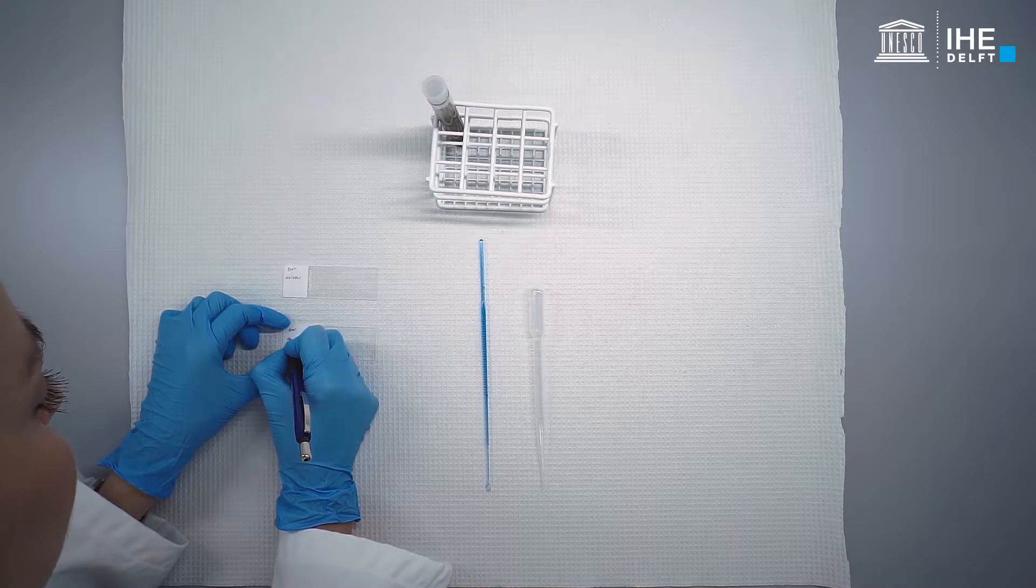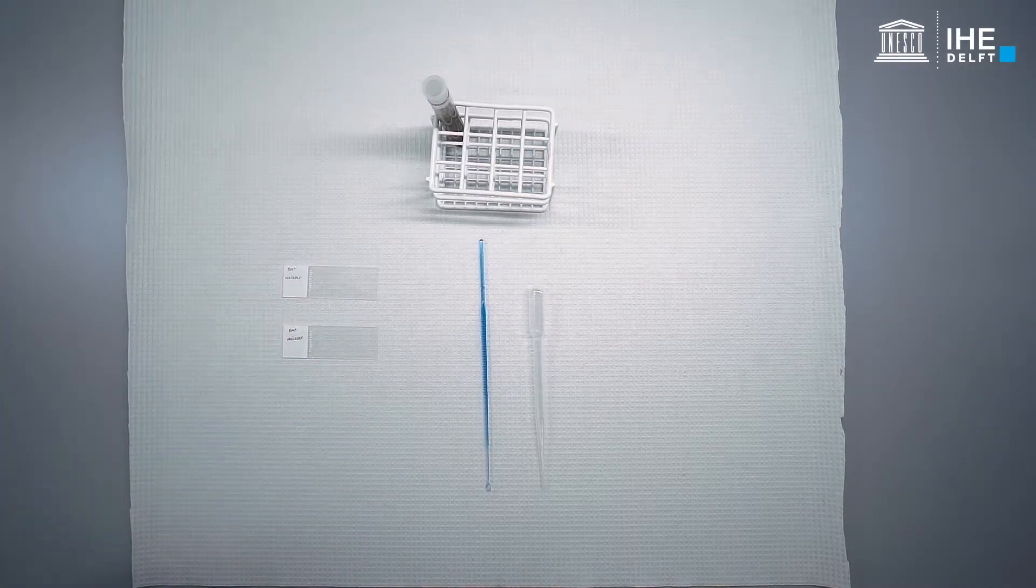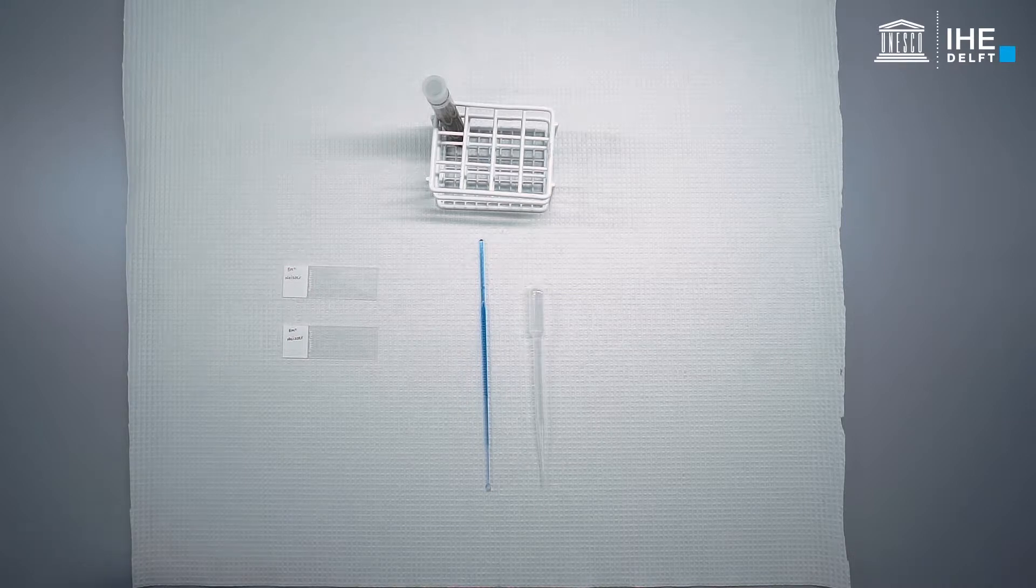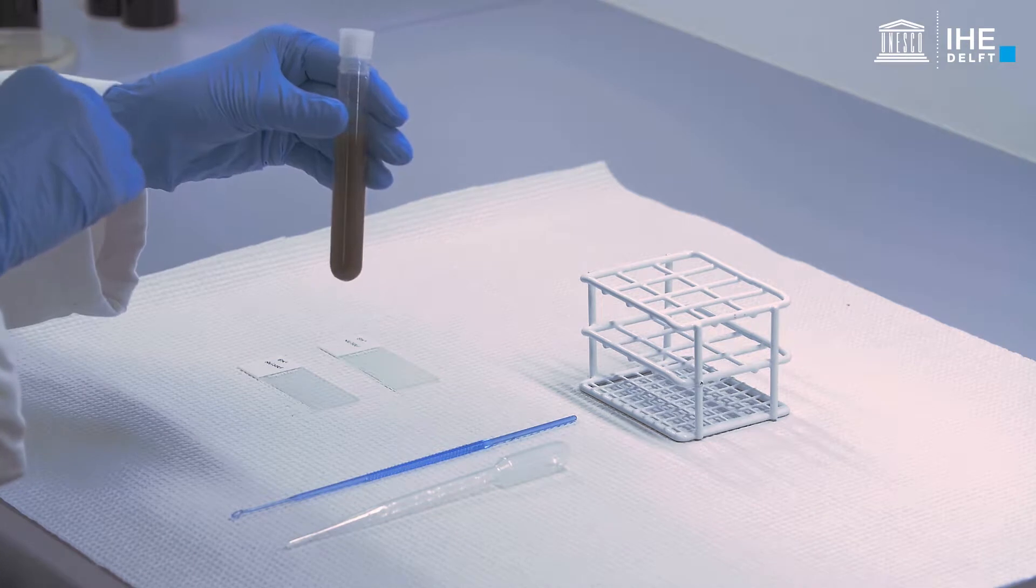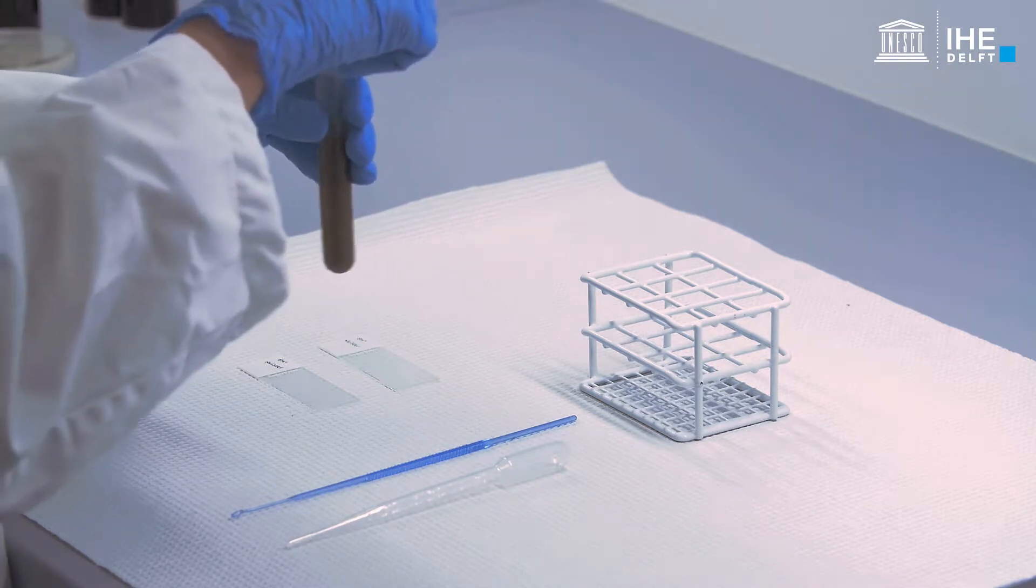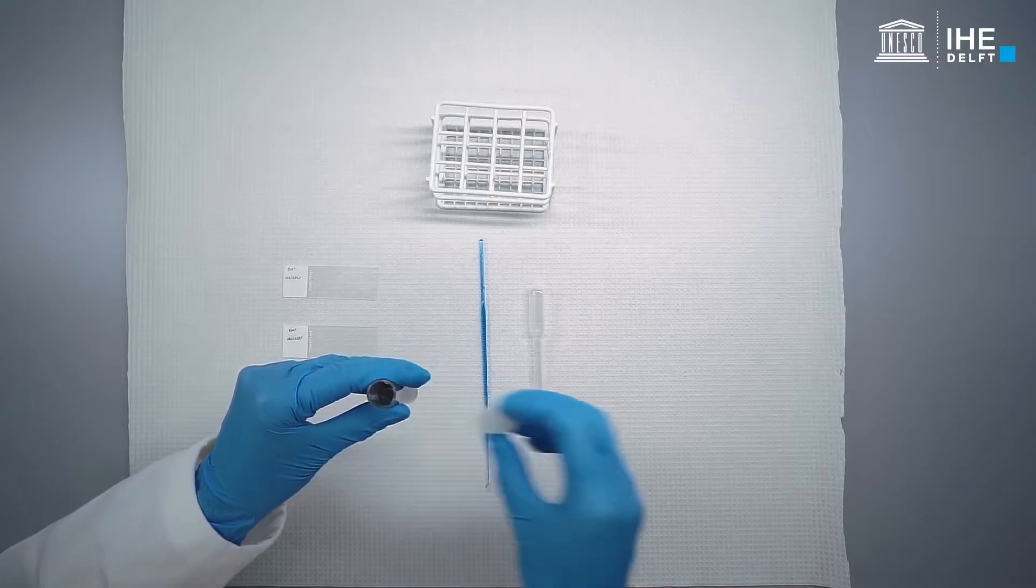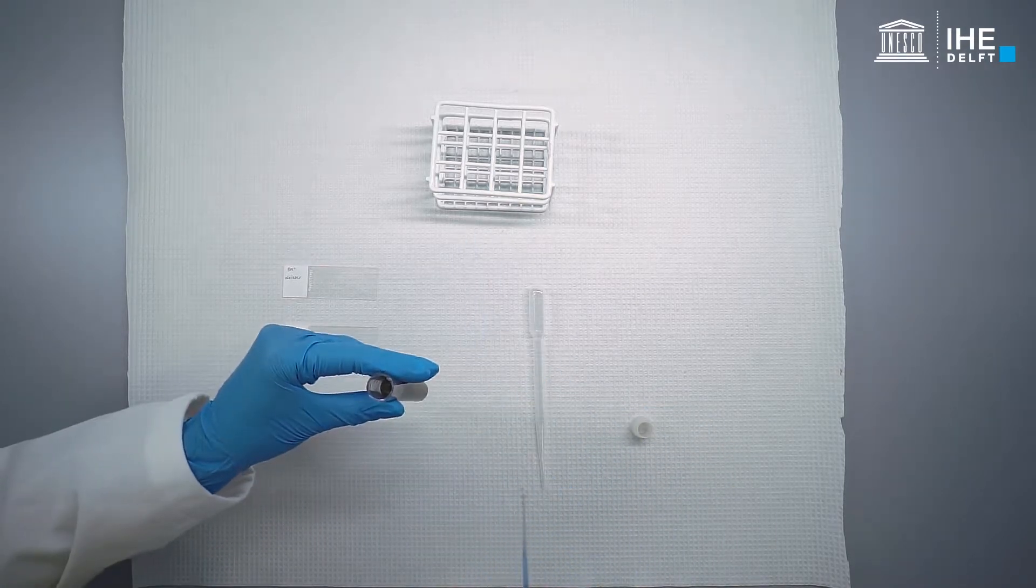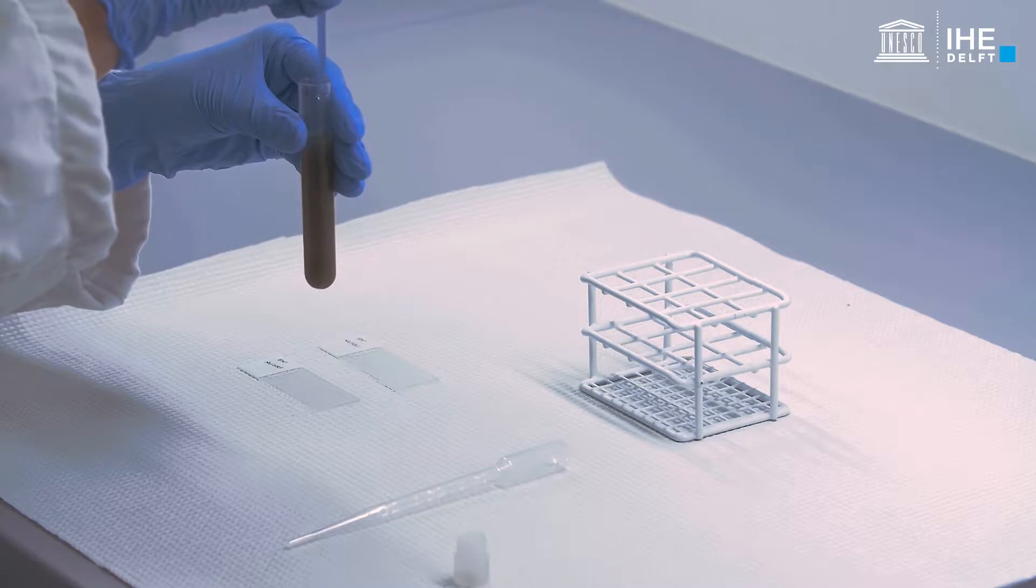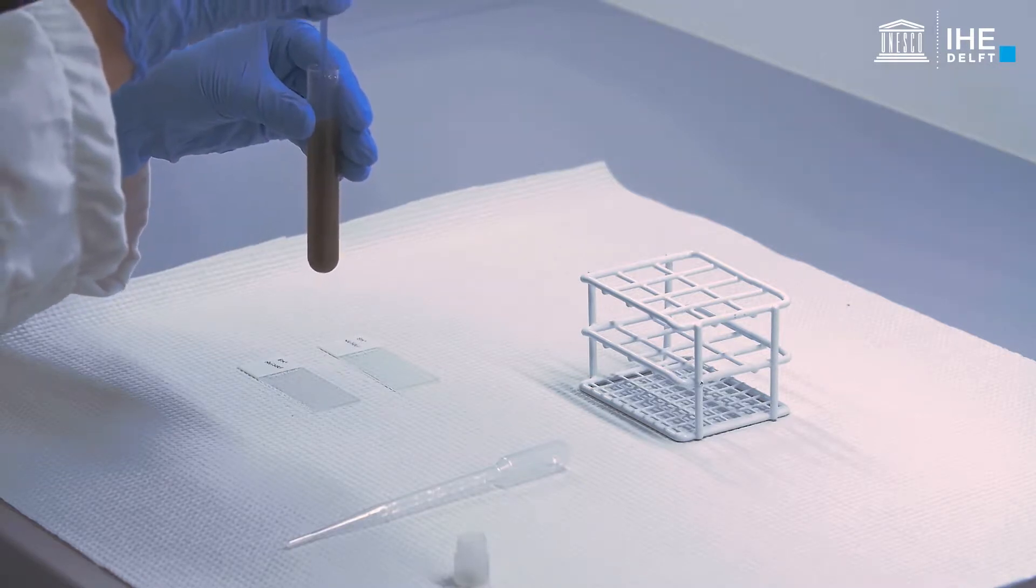Clearly label a glass slide with a lead pencil. To prepare a smear of an activated sludge sample, place a drop of sludge onto a glass slide with an inoculation loop or a single-use pipette. Carefully spread the sludge with a loop to form a thin layer of cells and allow to air dry at room temperature.